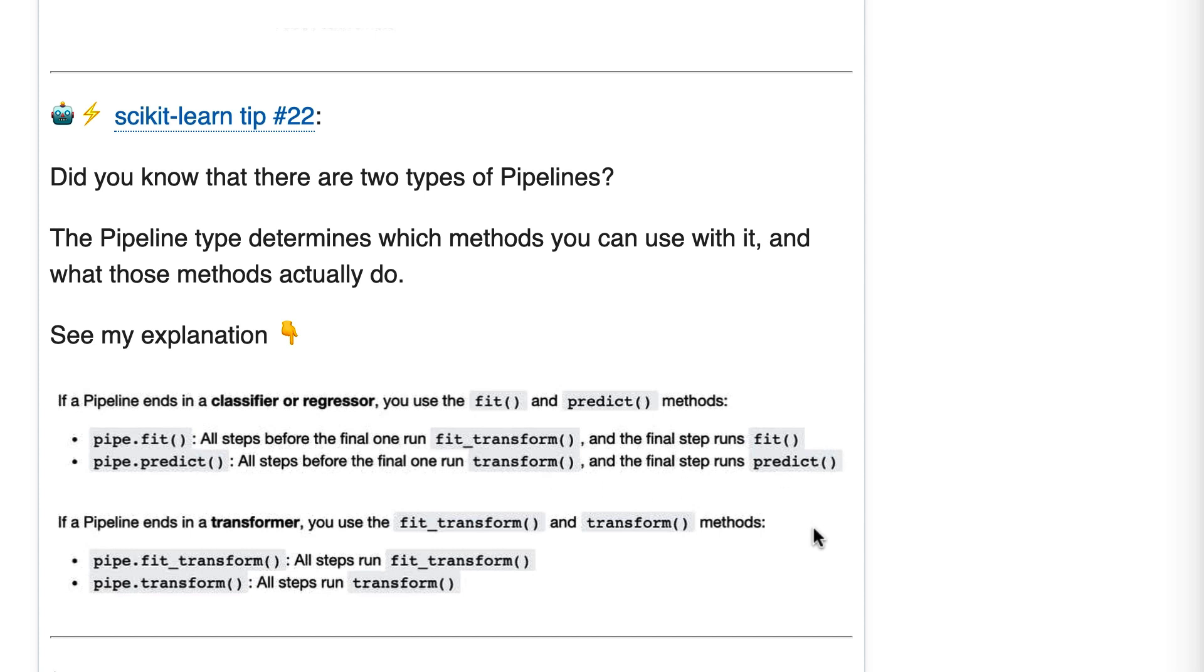Type two again ends in a transformer. For example, an imputer followed by a one hot encoder would be that type of pipeline. If you run fit_transform on this type of pipeline, all of the steps run fit_transform.